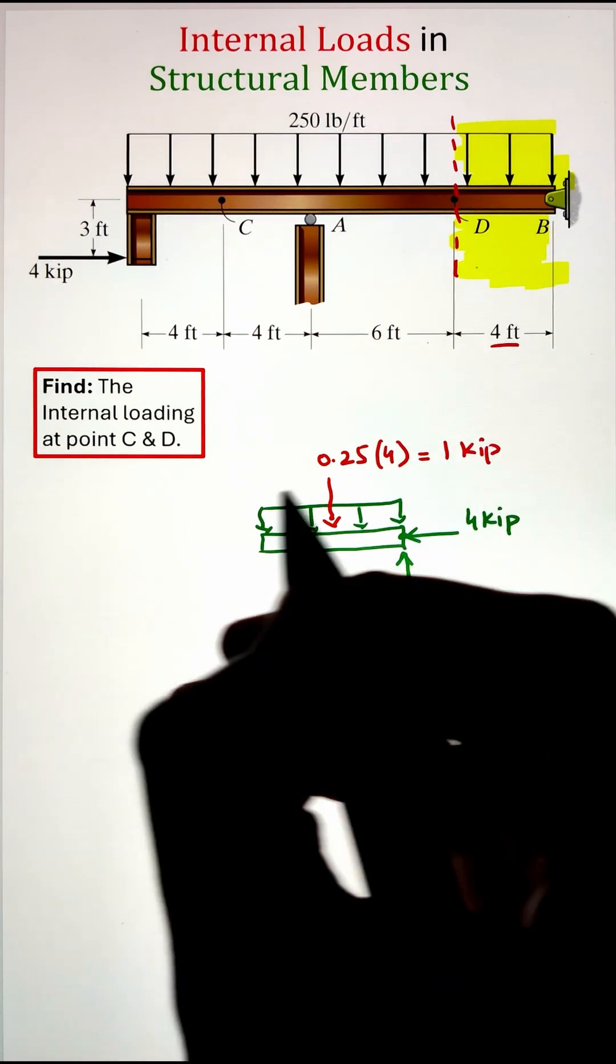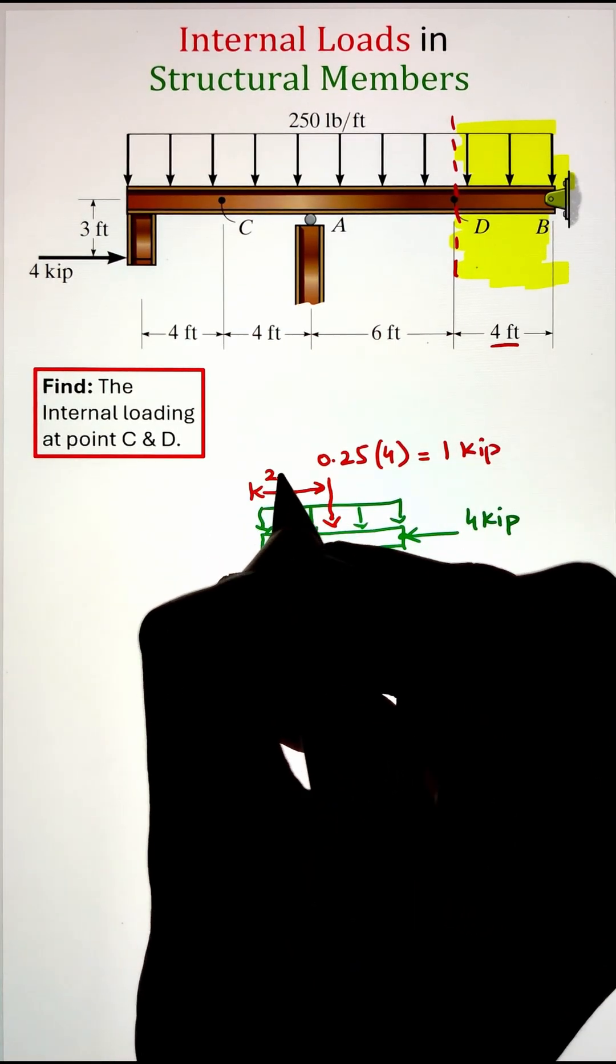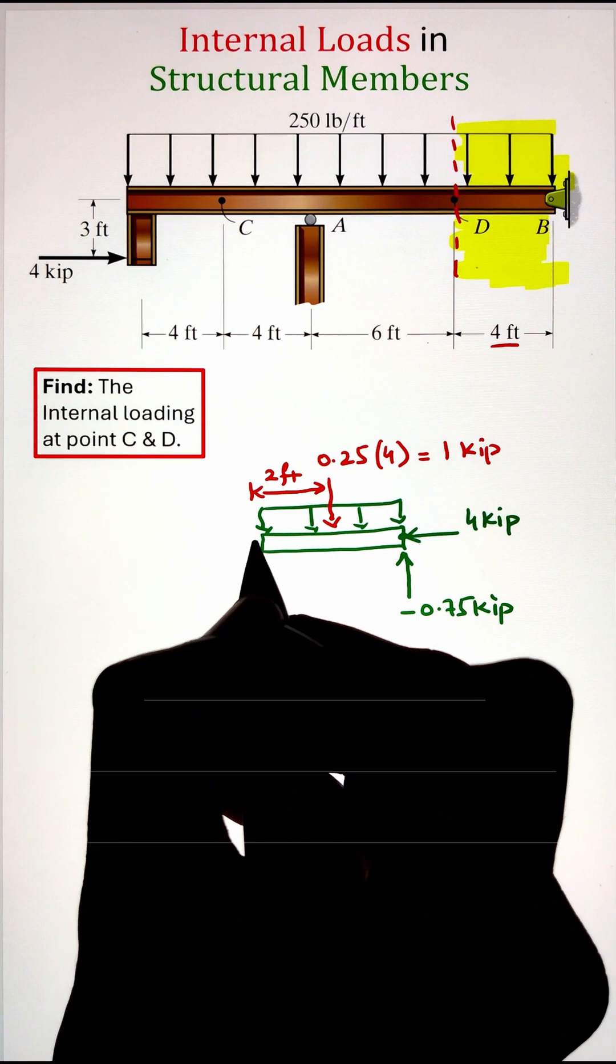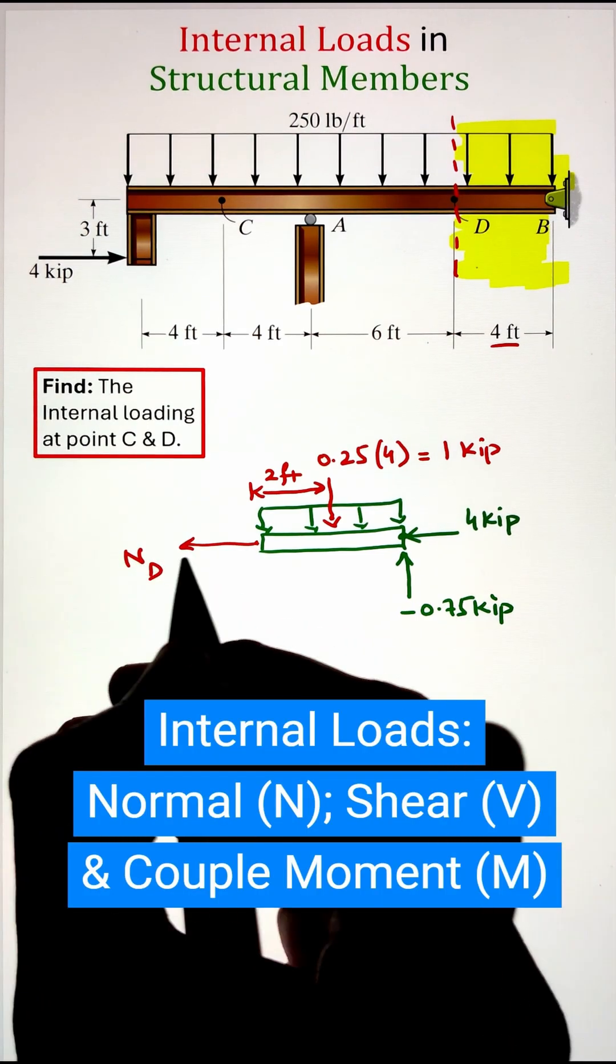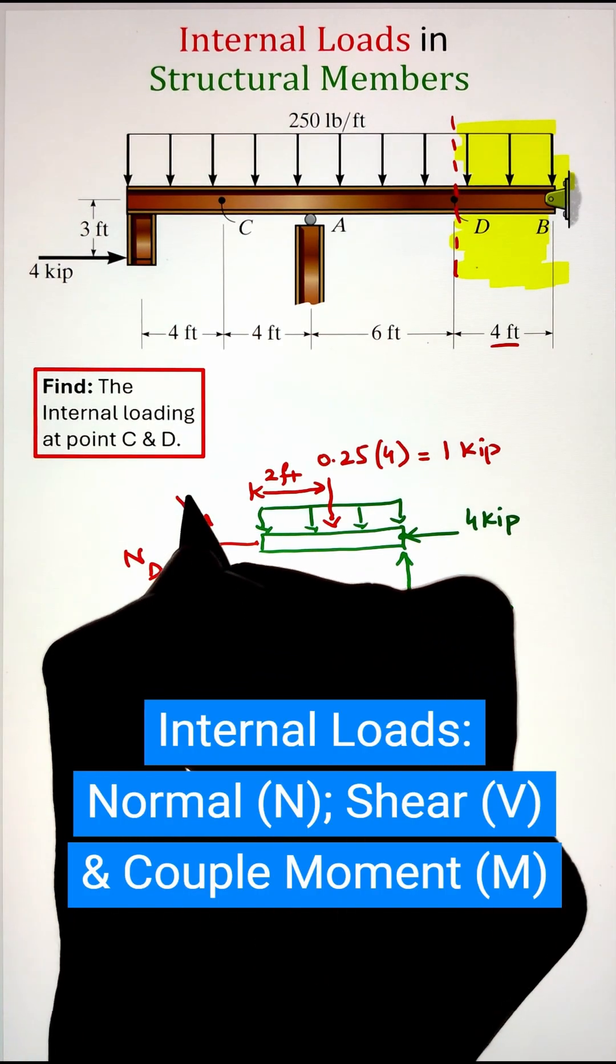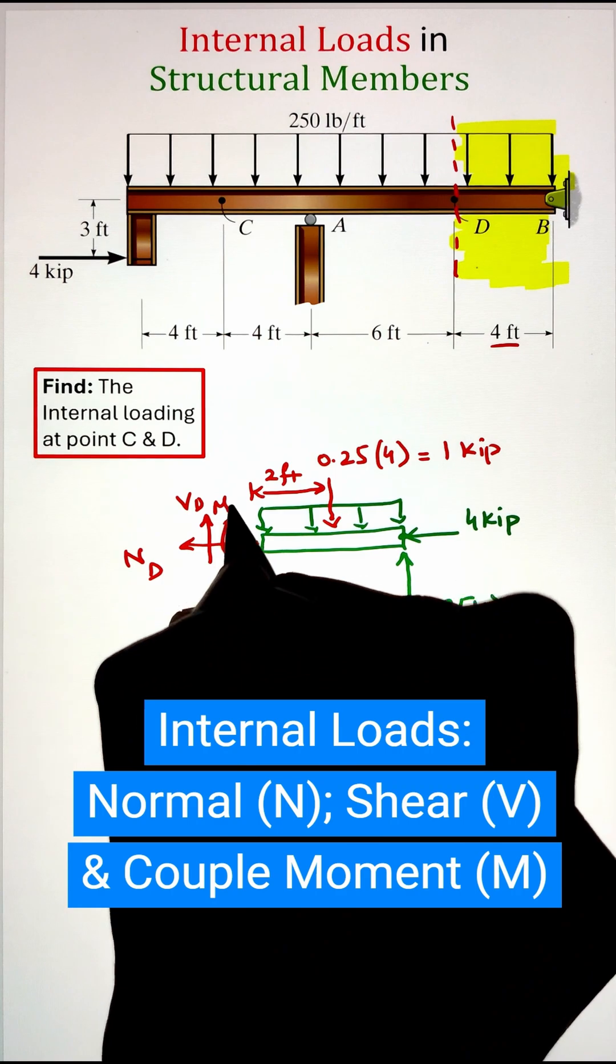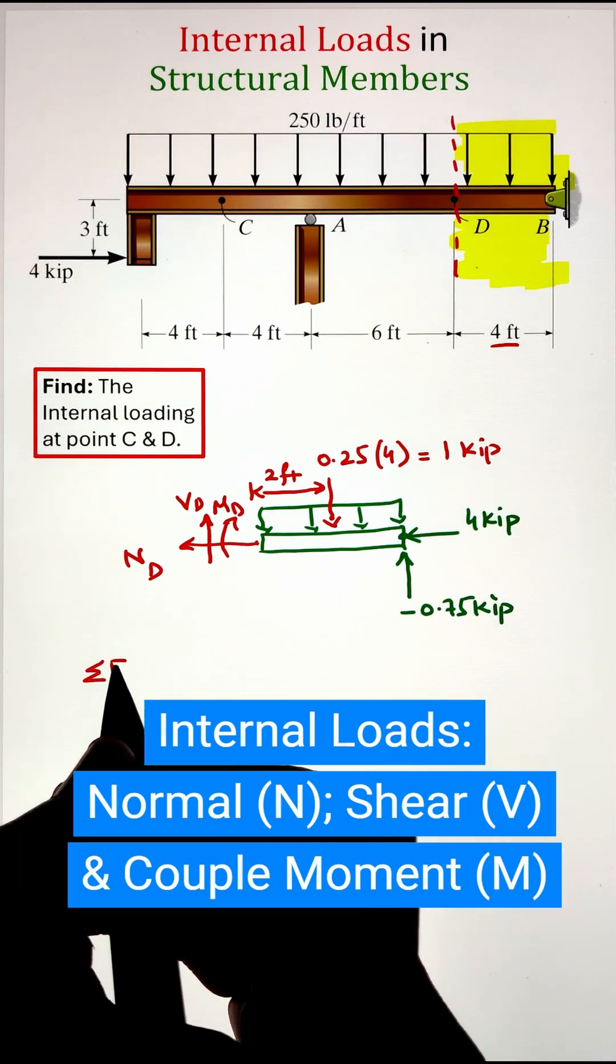Now at the cut, we will have three internal loads: N as normal force, V as shear force, and our couple moment M. Once we have the free body diagram, we can go ahead and start applying the equilibrium equations to solve for these unknowns.